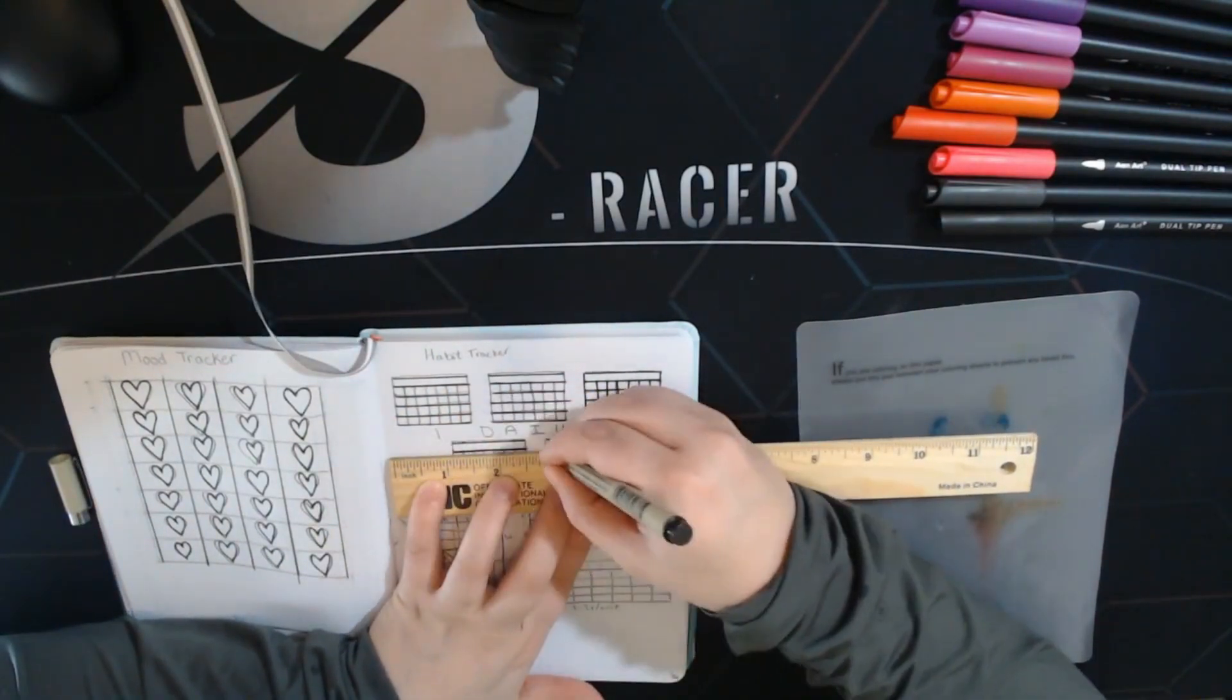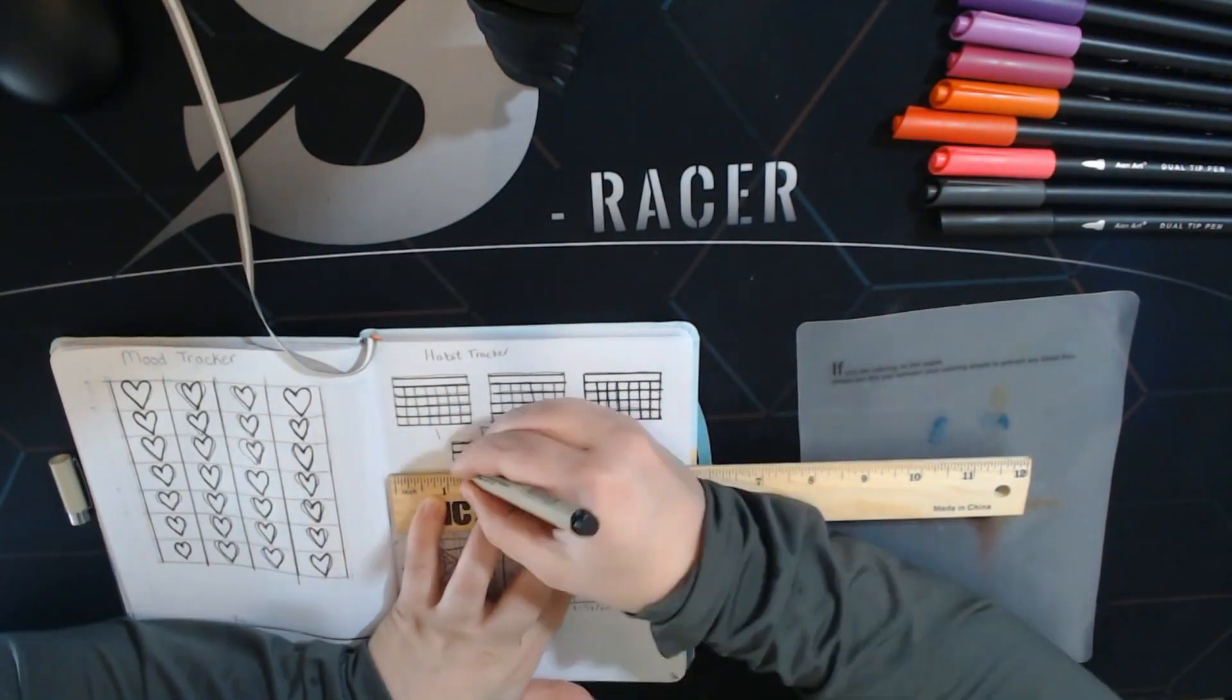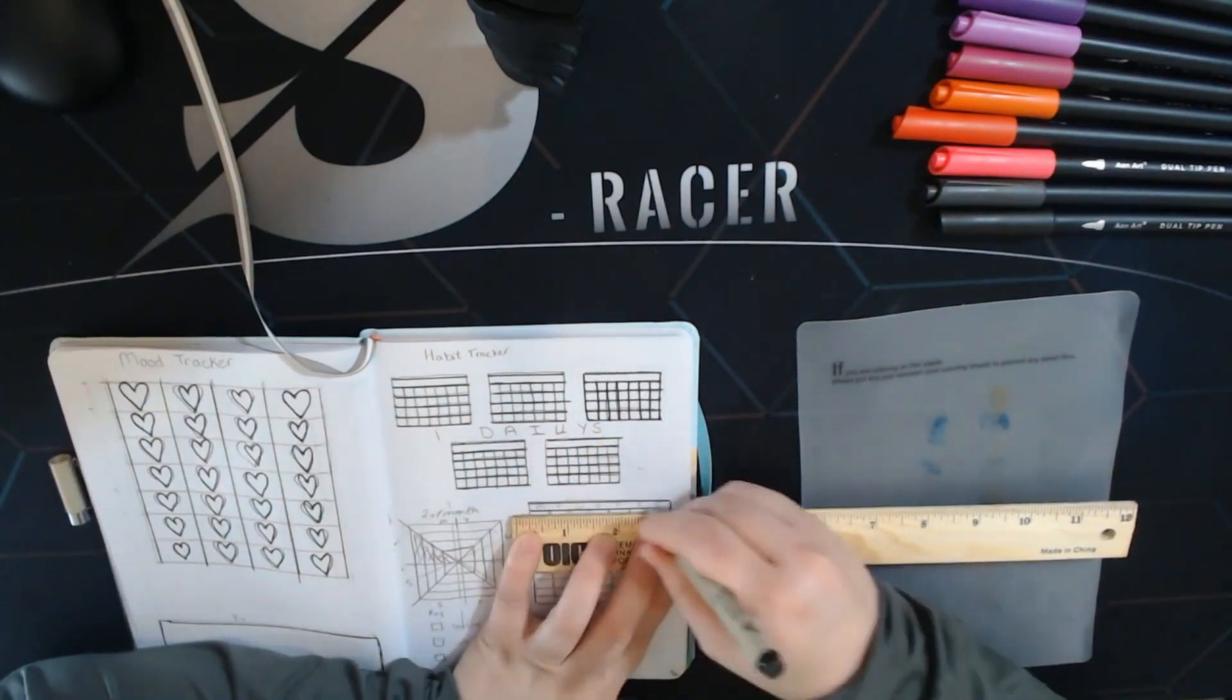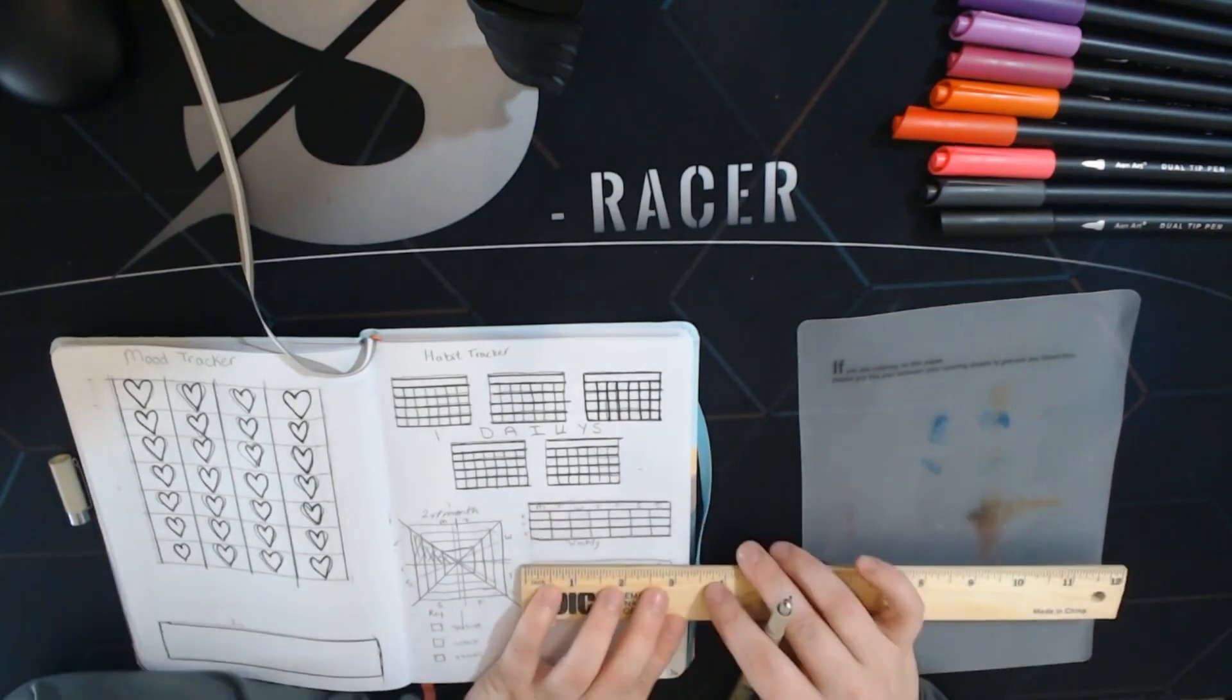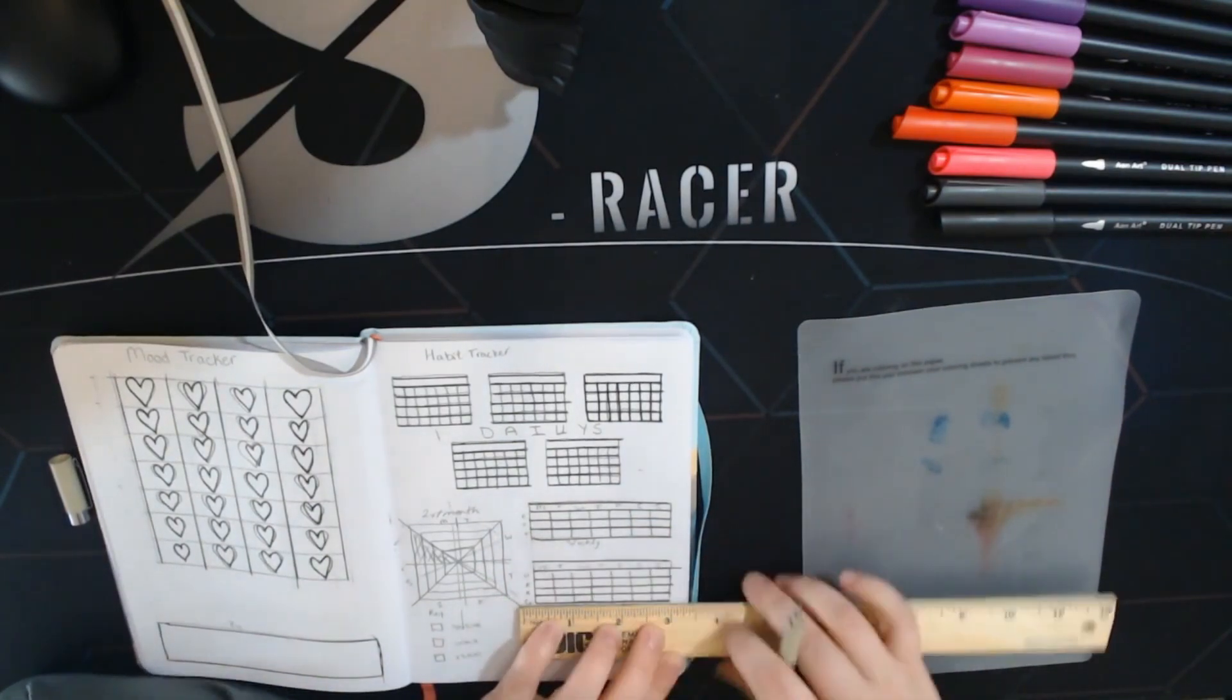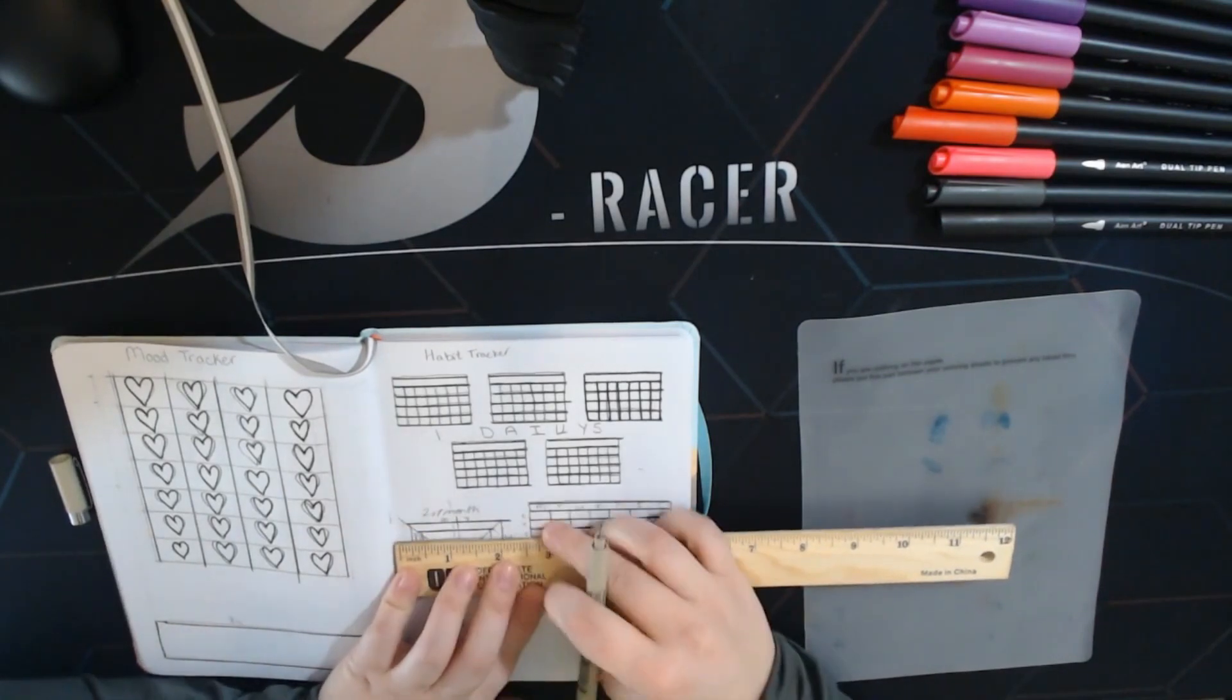So I moved some things into the dailies, and some things that were weekly or a couple times a week, I gave them their own set. So this is the weekly, just Monday to Sunday. I have three different things I want to make sure I do at least once a week, and then two to three times a week I have four different activities I wanted to do.